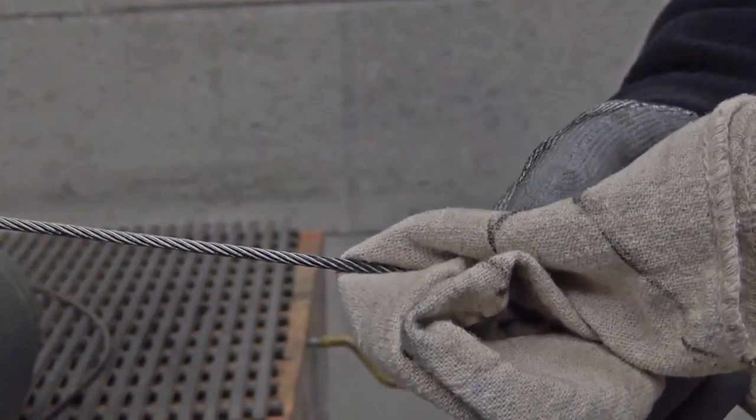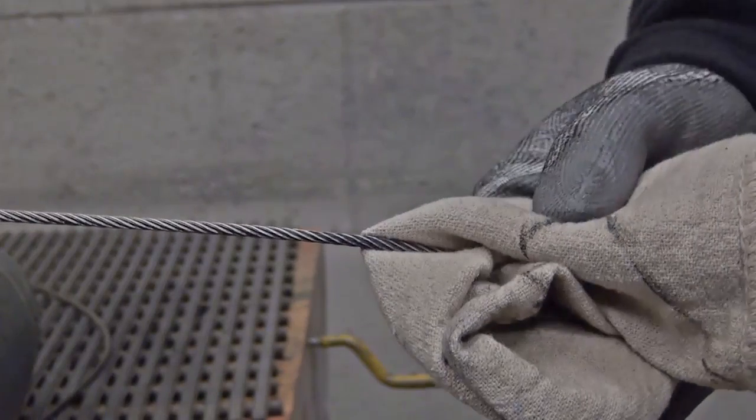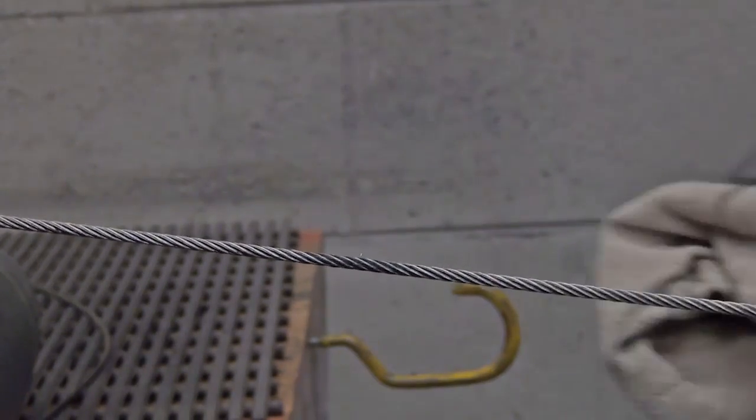Examine cables for broken wires by passing a cloth along the length of the cable. The cloth will snag on broken wires.